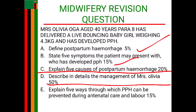The next heading is arresting hemorrhage. Here you can say: I will carry out a rapid assessment to ascertain the possible cause of postpartum hemorrhage and assess the general condition of the woman. I will manage Mrs. Olivia according to the cause as follows. Note: if the scenario specifies the cause of PPH, mention only that particular cause; if not specified, you need to have all headings mentioned. The first heading under arresting hemorrhage is atonic uterus.